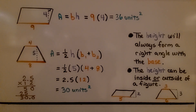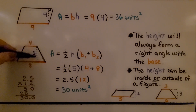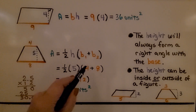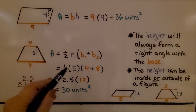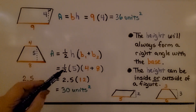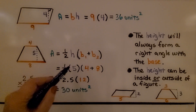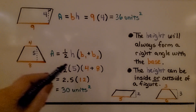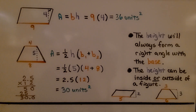For our trapezoid, base 1 is 4, base 2 is 8, and the height is 5. We add 4 plus 8 to get 12, then multiply by half of 5. Half of 5 is 2.5. We multiply 2.5 times 12 and get 30 units squared.